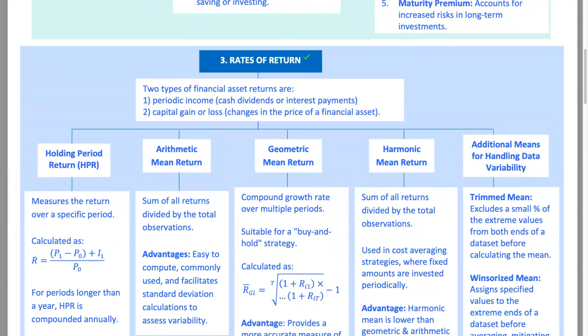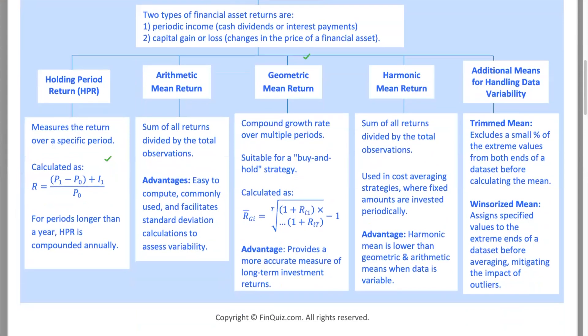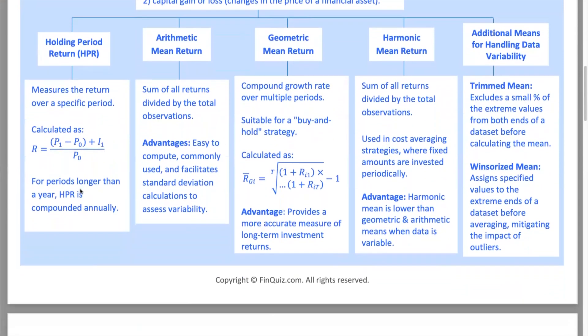There are two main types of returns. One is periodic income, which includes cash dividends or interest payments you get from your investments. The second is capital gains or losses, which come from changes in the price of your investments. To measure return, we use different methods. Let's start with the holding period return: HPR equals the price at the end plus income, minus the price at the beginning, all divided by the price at the beginning. For example, if you bought a stock for $100, received $5 in dividends, and sold it for $110, your HPR would be 15%.